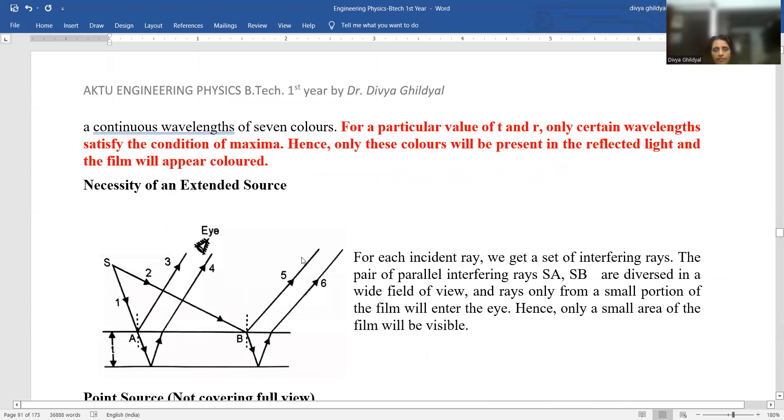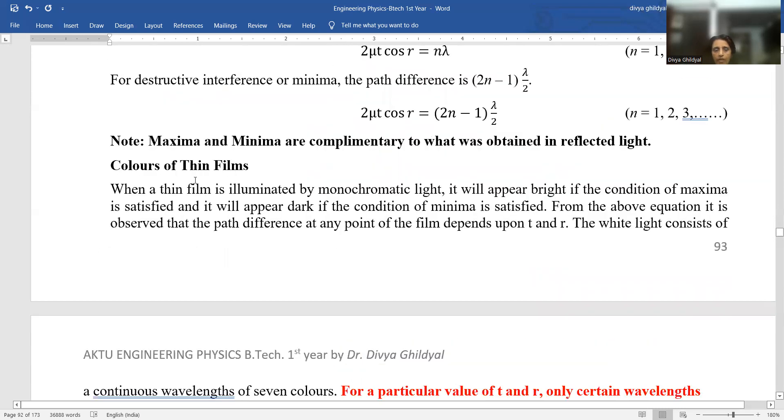Section A, a very favorite question is, why do we see colors in thin film? Now, you remember one thing in section A, once they had even asked, why do you see a particular color in a fringe pattern and you don't see a particular color?